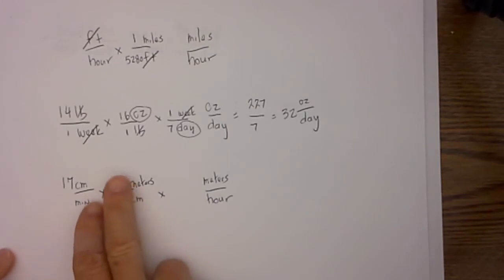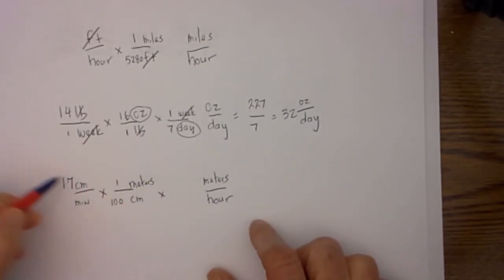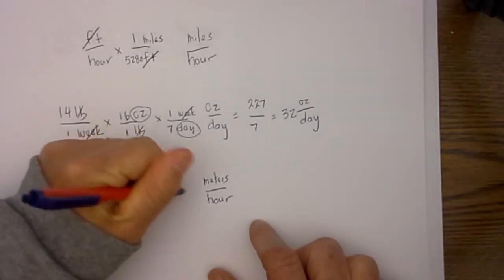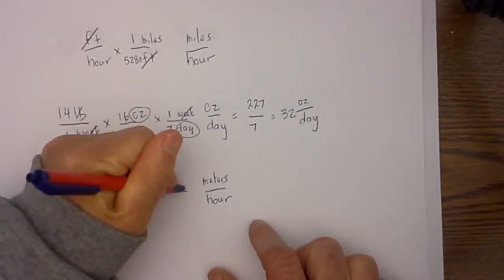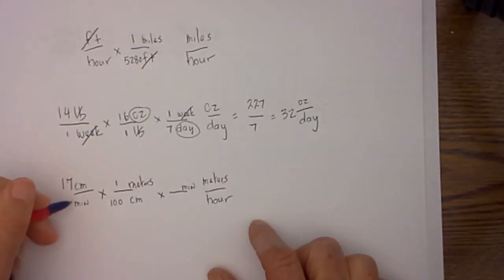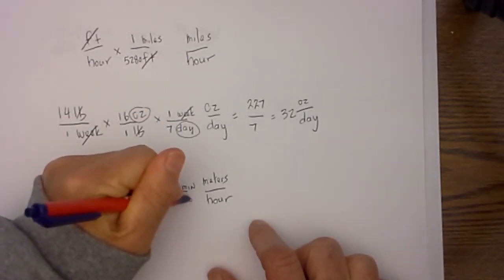I then, remember I can act like that is not even there, I need to get hours on the bottom and get rid of the minute. In order to get rid of the minute I will put that on top and therefore I will put hours on the bottom.